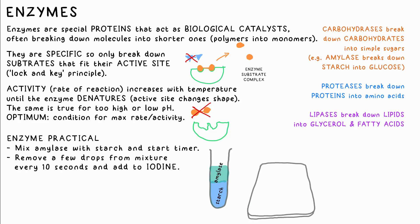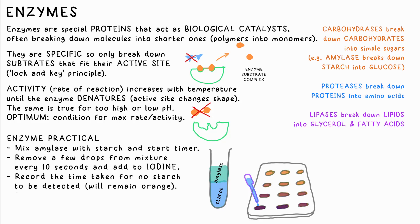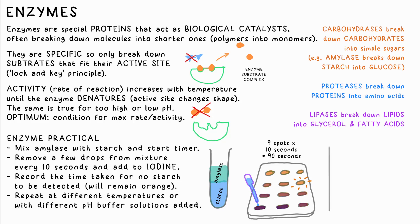Once mixed, we start timing, then every 10 seconds we remove a couple of drops and put them in a spot tile dimple with iodine. To begin with, the iodine will turn black due to there still being starch present, but eventually it will stay orange, showing that all of the starch has been broken down. Calculate the time taken to do that, then plot these times against pH or temperature. Draw a curved line of best fit, and the lowest point is where the starch would have taken the shortest time to be broken down — that's the optimum temperature or pH.